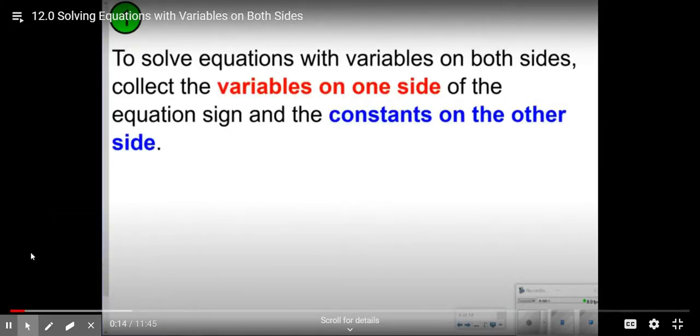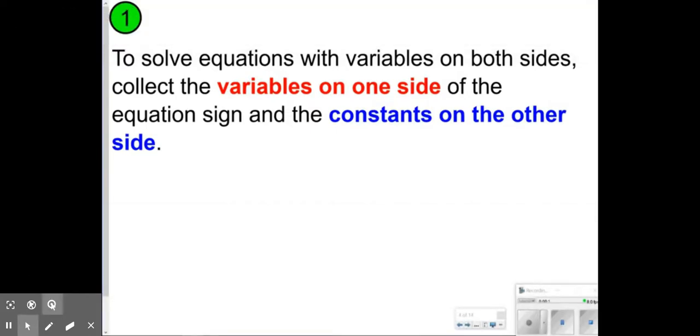To solve equations with variables on both sides, the first thing to understand is that variables must be collected on one side of the equation sign and constants on the other side.